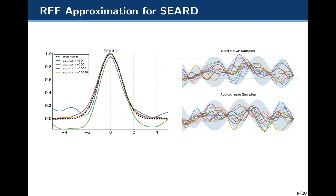If you make m significantly smaller than n, this is quite a savings. You can see a pretty decent approximation for the kernel using sample sizes that could be quite a bit smaller than your initial dataset. On the left is a plot of the squared exponential ARD kernel: the dotted black line is the true kernel, with approximations using RFFs for n=50 (blue), n=100 (green), n=1000 (purple), and n=10,000 (orange). On the right are discrete samples from two Gaussian processes — one using the SEARD kernel and one using the approximate SEARD kernel — demonstrating that the prior is relatively similar to the original.